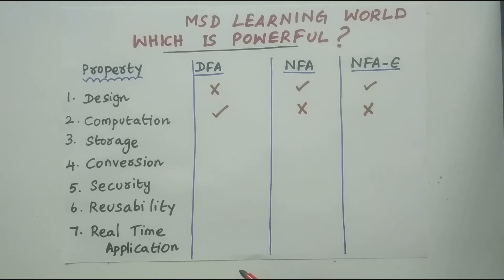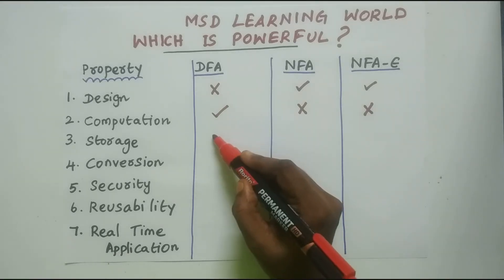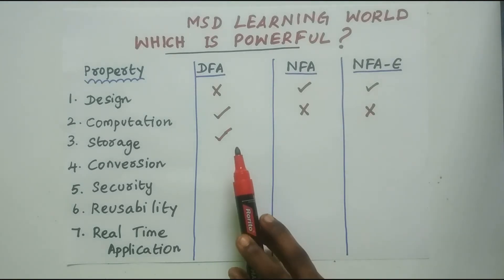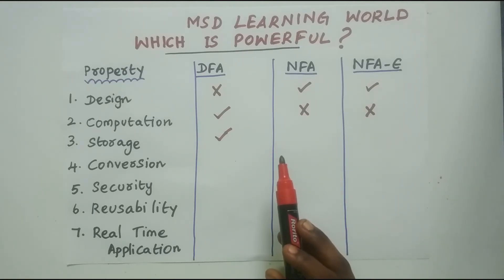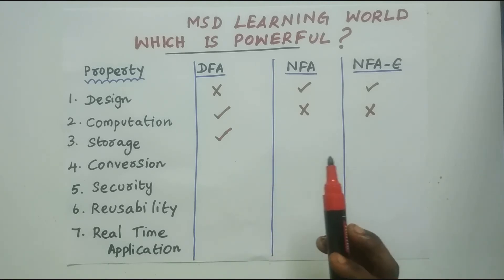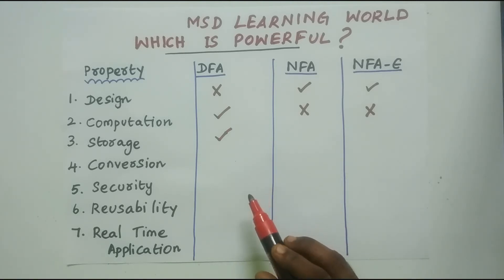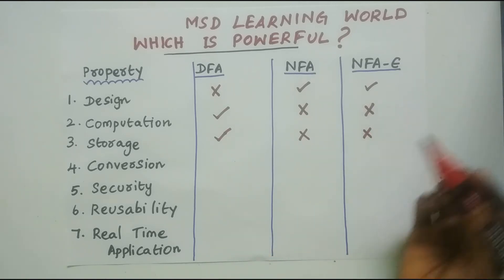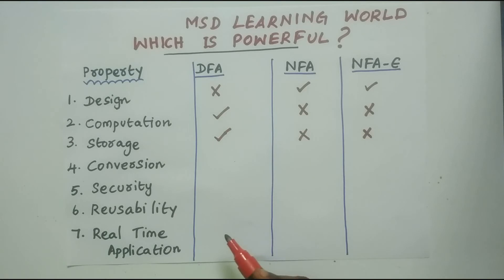Coming to the third property — Storage. Memory is a very important factor to differentiate the efficiency of any machine. DFA is more powerful here because the number of states is very less and there are fewer transitions, so storage usage is very low. Whereas in NFA and NFA-epsilon, you need more storage for the larger number of states and the greater number of transitions, so storage is higher compared to DFA.